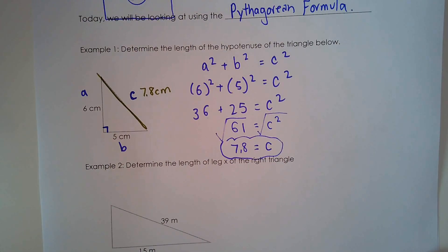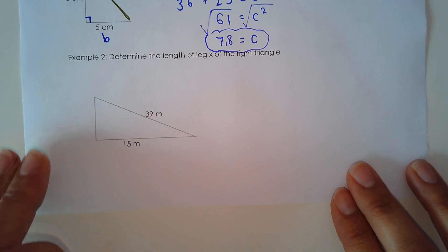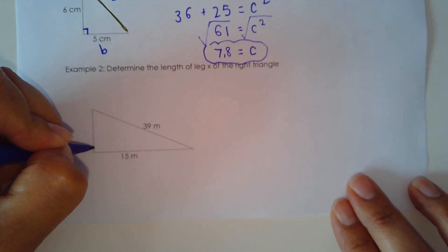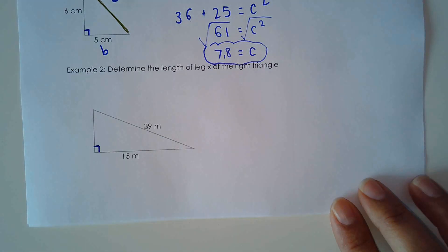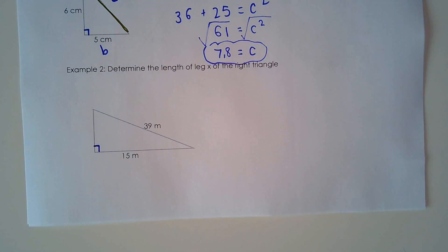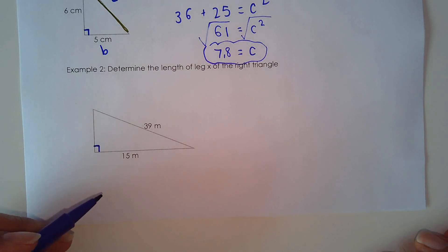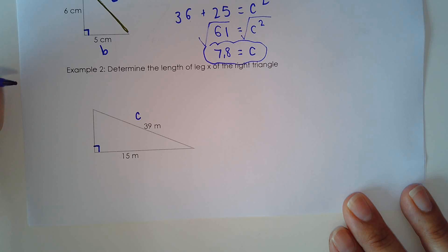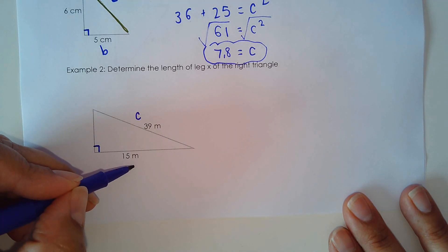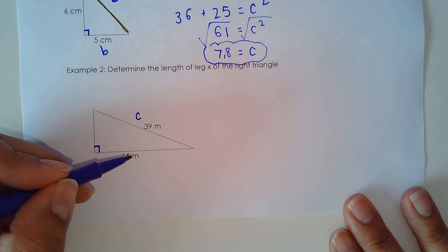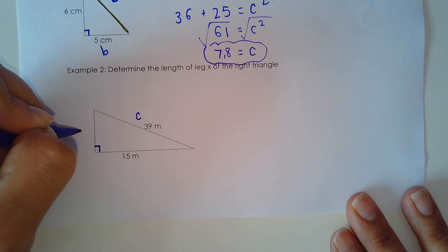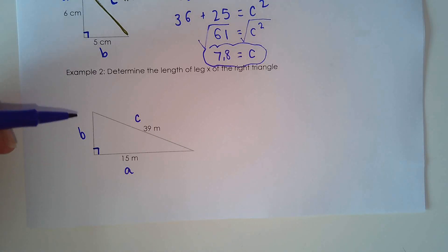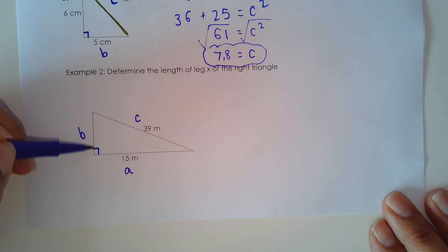Example 2. Determine the length of leg X of the right triangle. So this is the right triangle here. I'll just put that symbol in. And we start by labeling the sides. So our longest side is always going to be side C. And then the legs, it doesn't matter which side I call A or B. So I'll call this one B this time and this one A. So it looks like in this case here, we're solving for side B now.